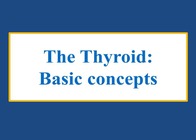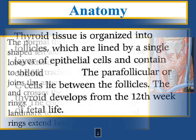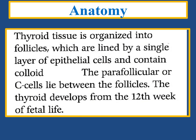The Thyroid: Basic Concepts. Anatomy first. The normal thyroid consists of pear-shaped left and right lobes. The lobes extend from the thyroid cartilage to the sixth tracheal ring, and the isthmus joins the anterior parts of the lobes and crosses the second and fourth tracheal rings. The cricoid cartilage is an agile landmark to identify, and the tracheal rings extend beneath this cartilage. Thyroid tissue is organized into follicles, which are lined by a single layer of epithelial cells and contain colloid. The parafollicular, or C-cells, are between the follicles.